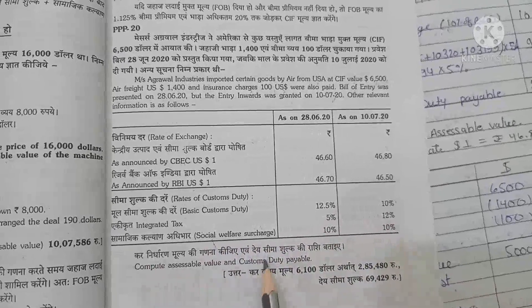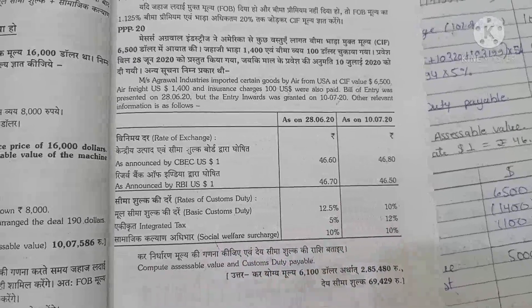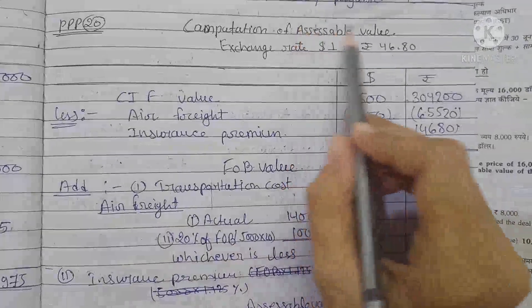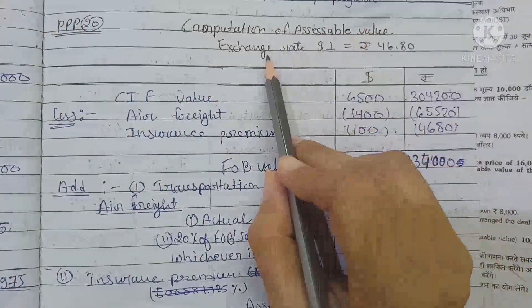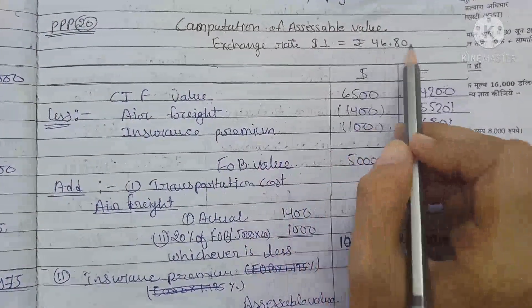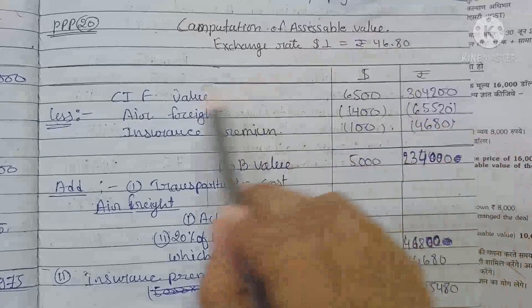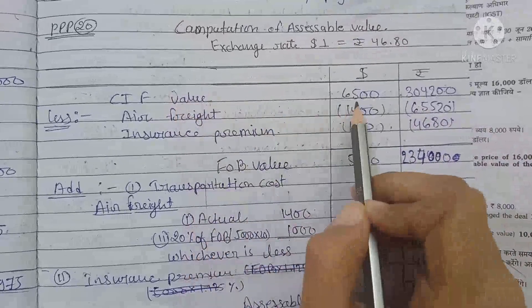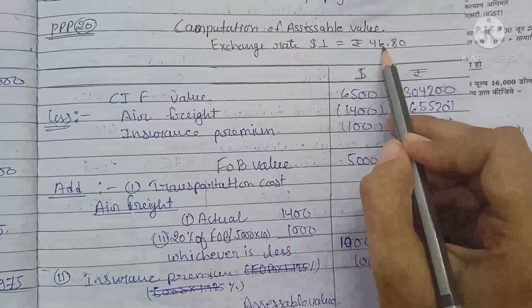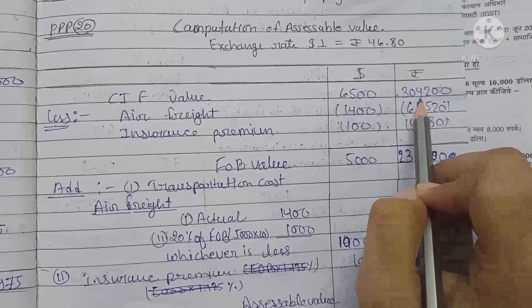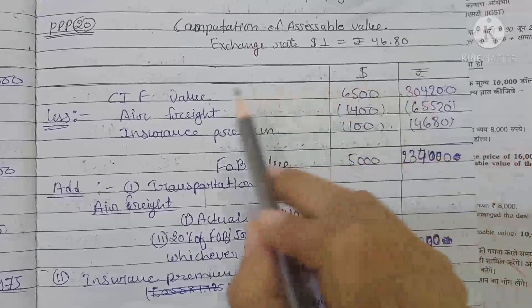First of all, we calculate the custom duty payable. Computation of assessable value: Exchange rate is $1 equal to ₹46.8. The CIF value was $6,500 multiplied by 46.8, which gives ₹3,04,200.